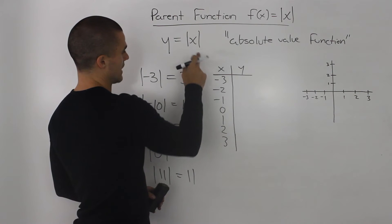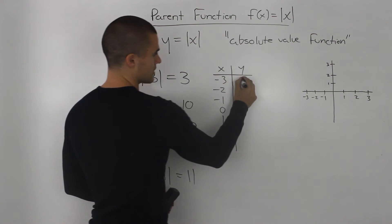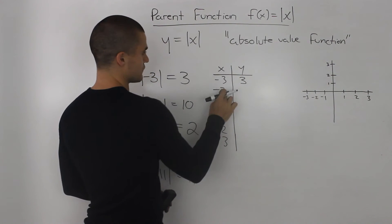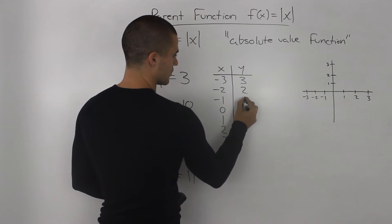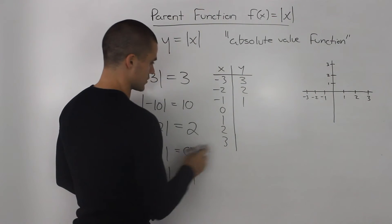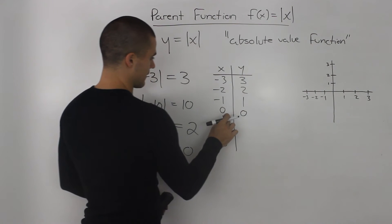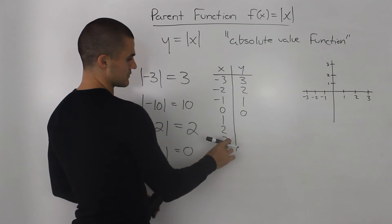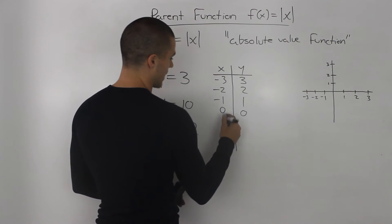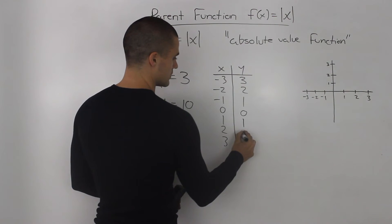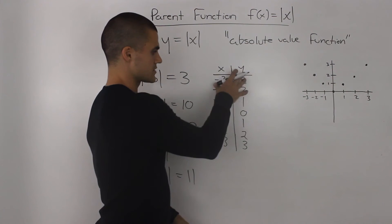If x is negative 3, the absolute value of negative 3 is just positive 3. The absolute value of negative 2 is just positive 2. Negative 1 is 1. The absolute value of 0 is 0. And then the absolute value of all the positive numbers stay as they are. So the absolute value of 1 is just 1, 2, and 3.